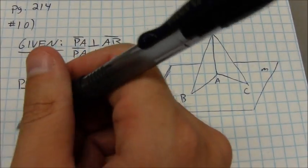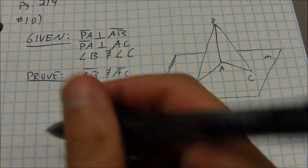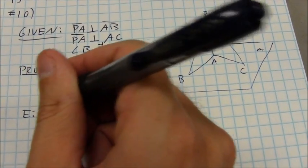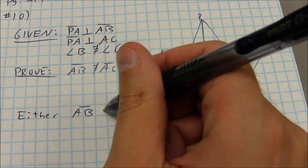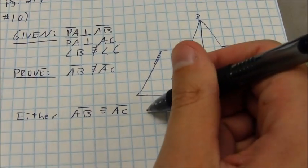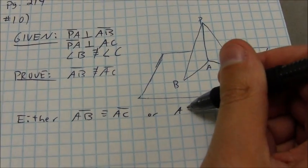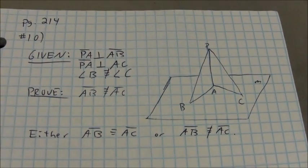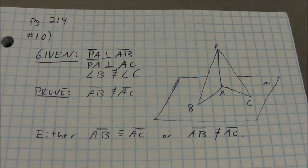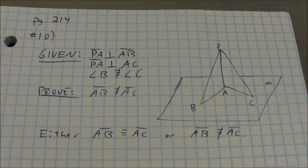First of all, you want to state that there are only two possible answers. Either AB is congruent to AC, or AB is not congruent to AC. If there are more than two answers, this process doesn't work, but in this case that will work.